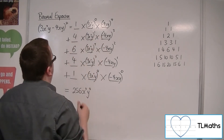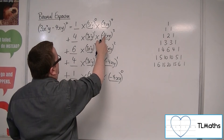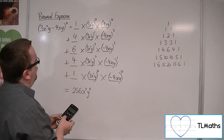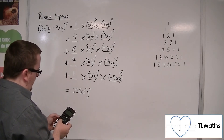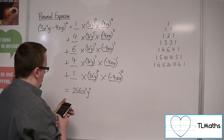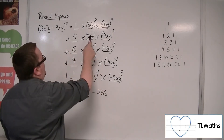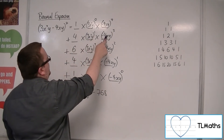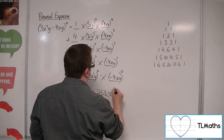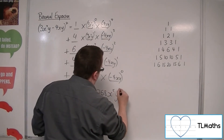Then we've got 4 times 3 to the 1 times minus 4 to the 3. So, 4 times 3 times minus 4 to the power of 3, which gives minus 768. We get x squared times x cubed, so x to the 5, and y times y cubed, so y to the 4.